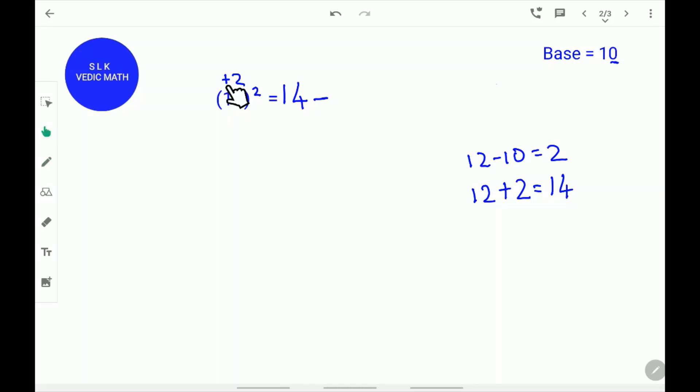Next, find the square of the difference 2. 2 square is 4. Write down the 4. So, the answer for 12 square is 144.